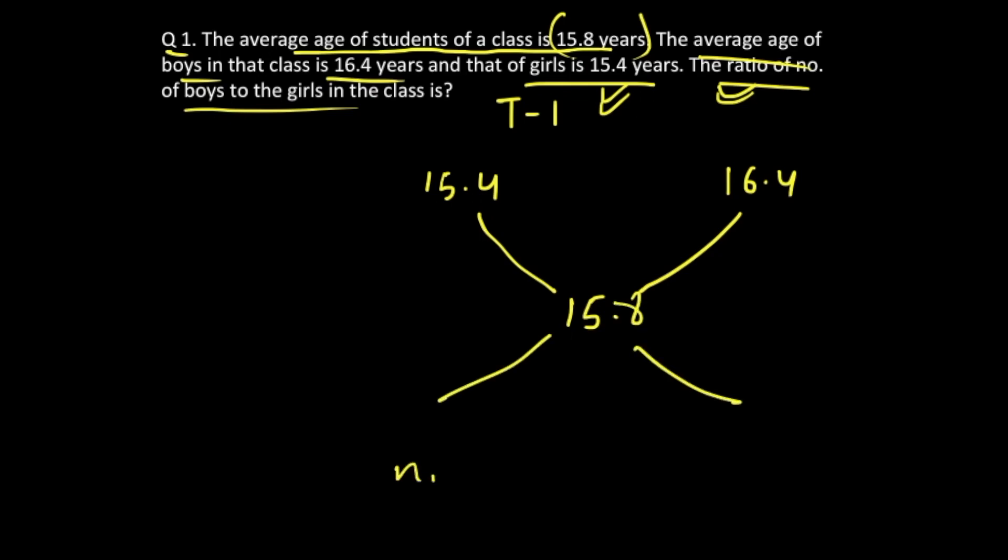We are supposed to find the ratio, that is n1 and n2. So we take the difference between these two values. If you subtract 15.8 from 16.4, you will get 0.6. Similarly, the difference between 15.8 and 15.4 is 0.4, which you will write over here.